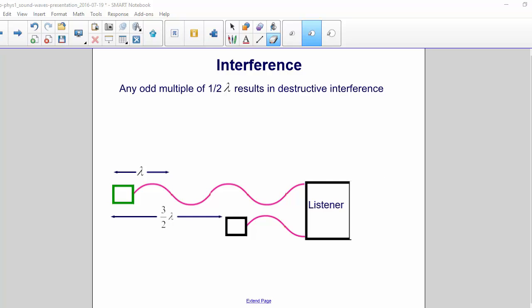And any odd multiple of one half of a wavelength results in destructive interference.